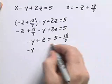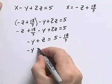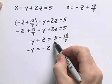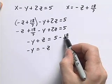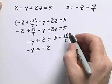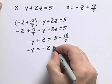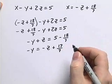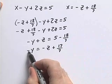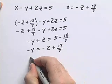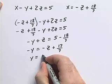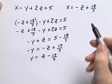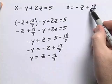We bring z to the other side to get negative y equals negative z plus 5 minus 18 sevenths. Since 5 is 35 over 7, we have 35 minus 18 equals 17, so negative y equals negative z plus 17 over 7. Multiplying both sides by negative 1, y equals z minus 17 over 7.